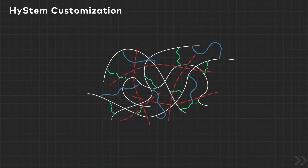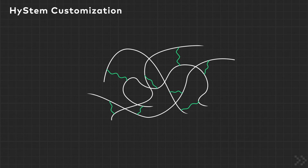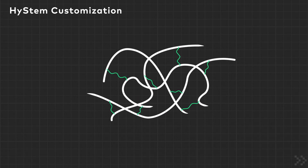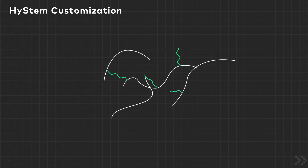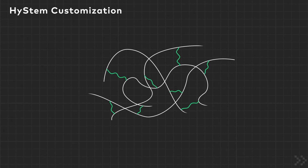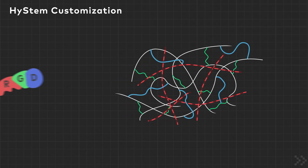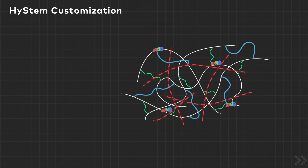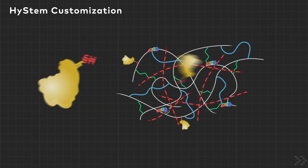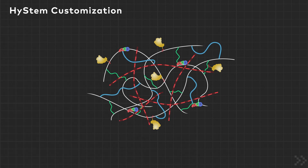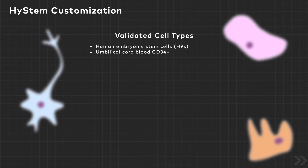The Hystem-HP kits are optimal for culturing stem cells whose natural environment is rich in hyaluronic acid, but they're also completely customizable. The concentration of the final solution can be varied to affect gelation time and the final gel stiffness. For applications which require specific cell-matrix interactions, a variety of ECM proteins or cell attachment peptides can be mixed into the hydrogel and incorporated non-covalently before gelation. Alternatively, attachment peptides having N-terminal cysteines can also be covalently linked to the matrix during the cross-linking process. Hystem-HP kits have been cited in over 2,000 publications.